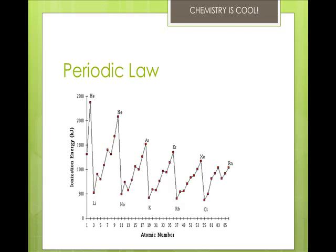When elements are arranged in order of increasing atomic number, there is a periodic repetition of their physical and chemical properties. Horizontal rows are called periods — there are seven of those — and vertical columns, or groups or families, there are 18 of those. Groups share similar physical and chemical properties, and groups are identified by number and letter, for example, 2A.